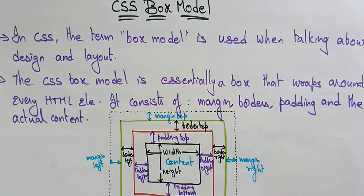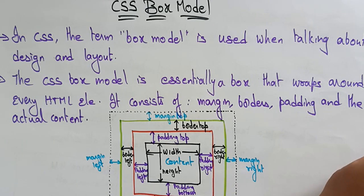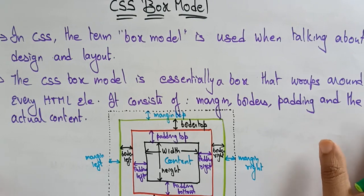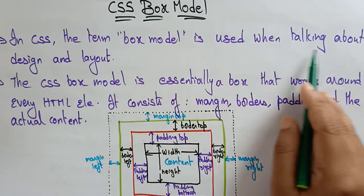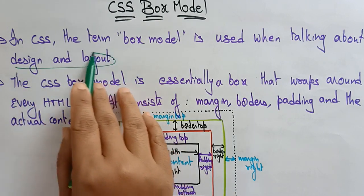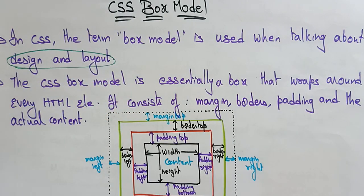Hi students, welcome back. Coming to the next topic in web technologies, we are discussing about cascading style sheets. Now coming to the next topic in CSS is the CSS box model. So what is this box model? In CSS, the term box model is used when talking about the design and layout. Whenever you are talking about the design and layout of a web page, you have to know about this box model.